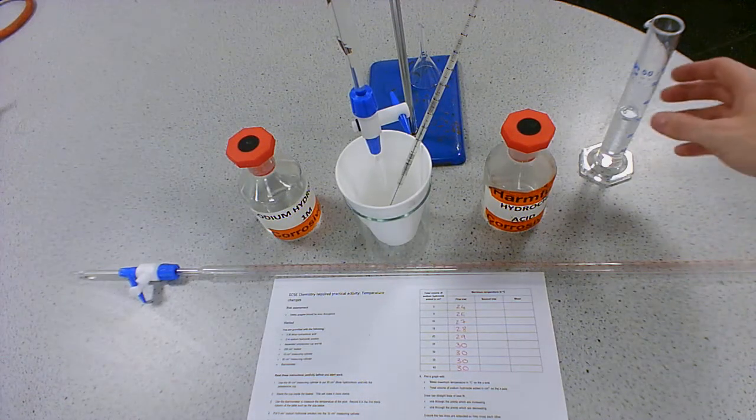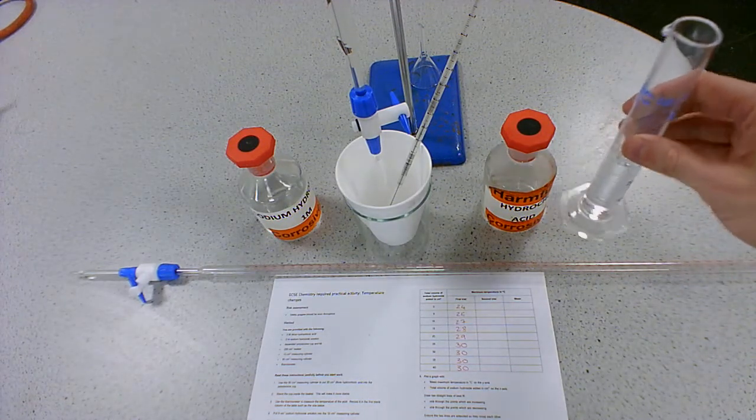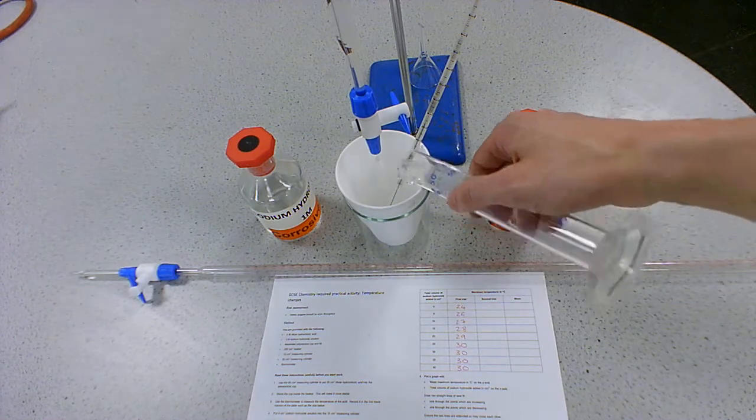So to start with, we're going to have 30 centimeters cubed of our hydrochloric acid into this polystyrene cup.